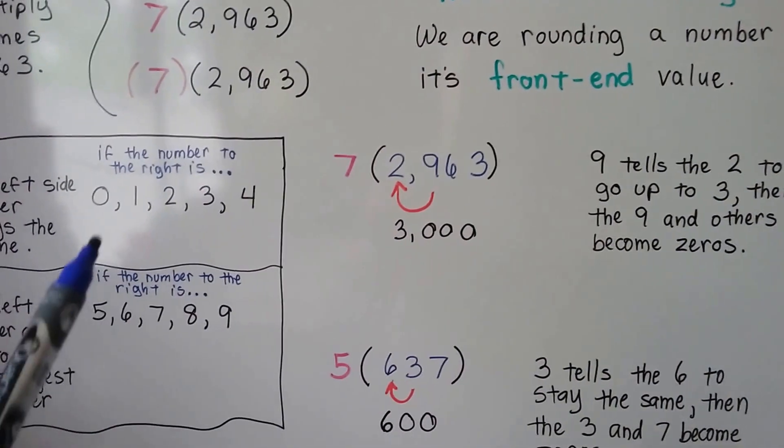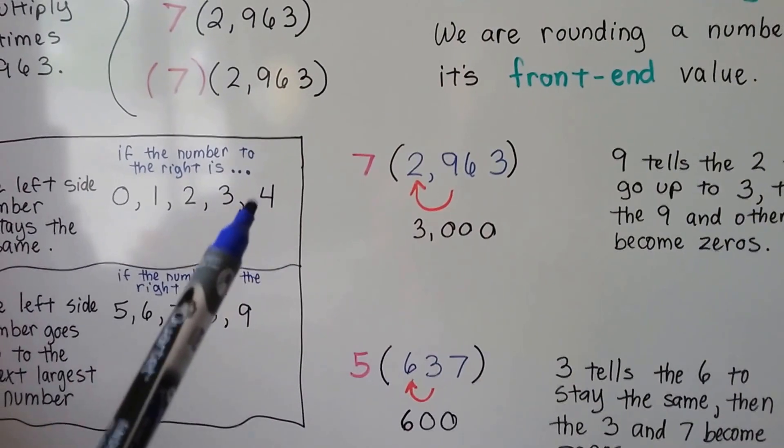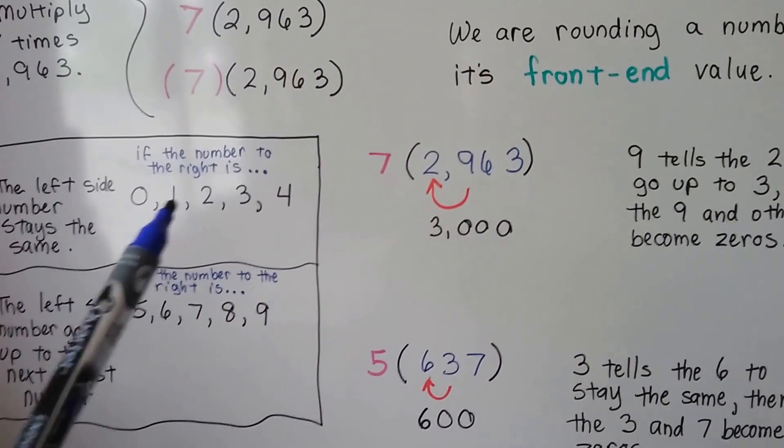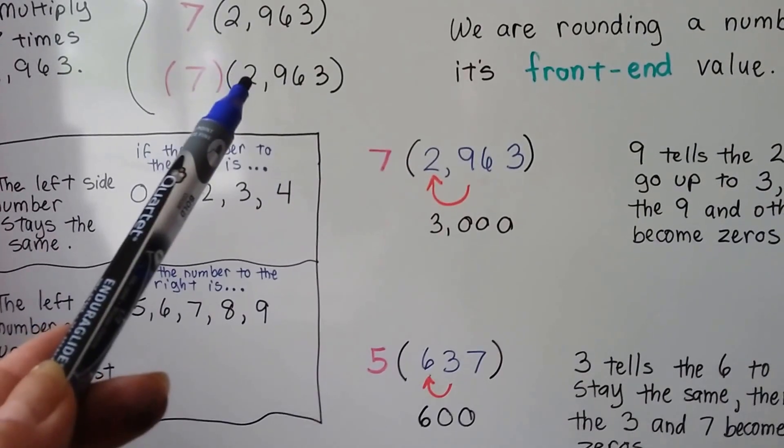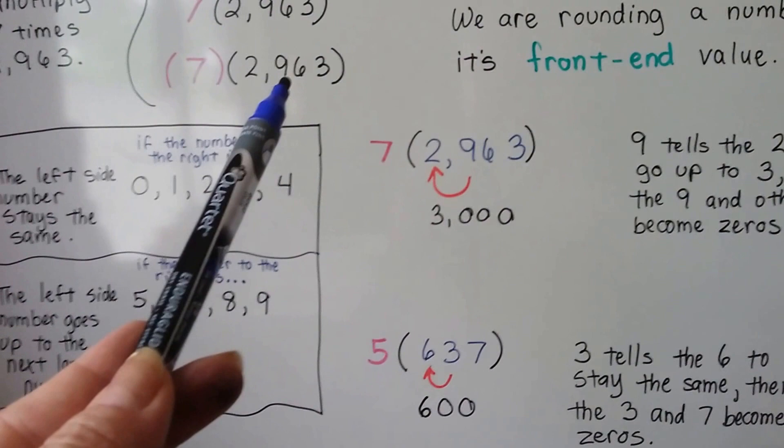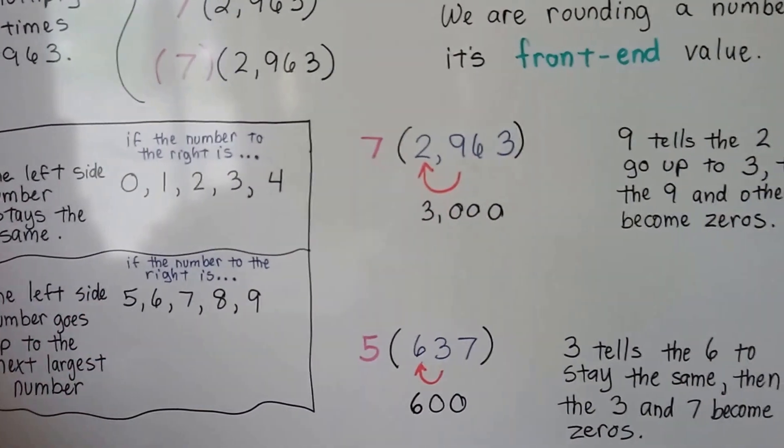So if it's a 0, 1, 2, 3, or 4 to the right side of the number that we're rounding, that's going to tell that number to the left to stay the same. And if it's a 5, 6, 7, 8, or 9, it's going to tell that number to go up.